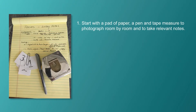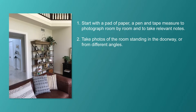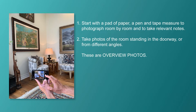So when you begin, start with a pad of paper, a pen, and a tape measure to photograph room by room and to take relevant notes. First, take photos of the room standing in the doorway or from different angles. These are overview photos, usually two or three per room.